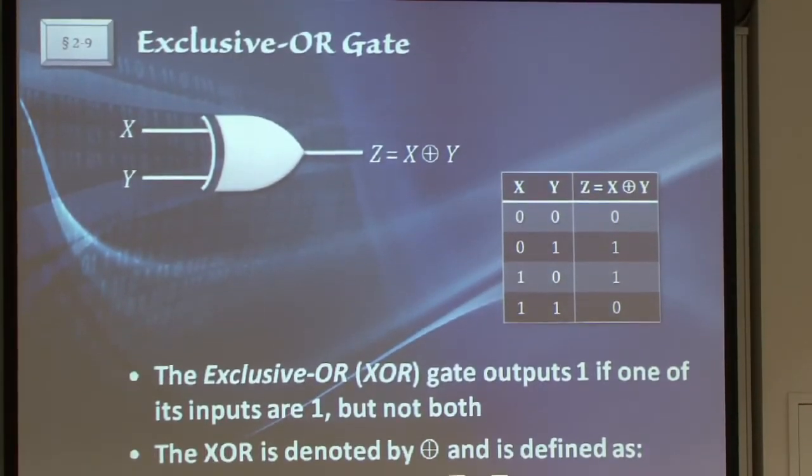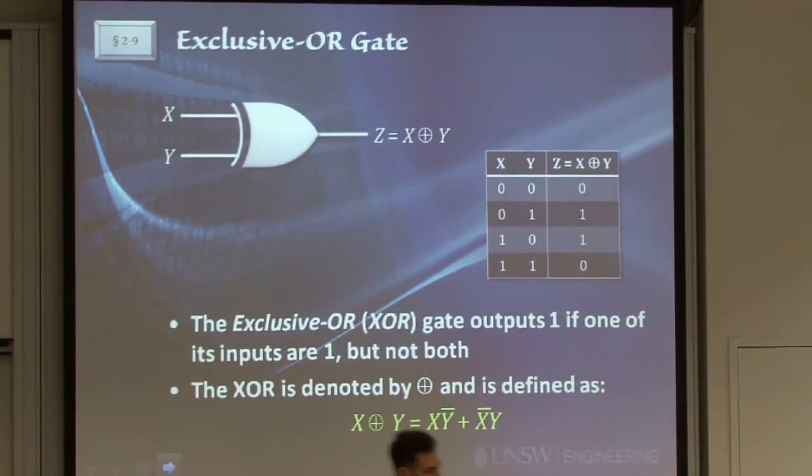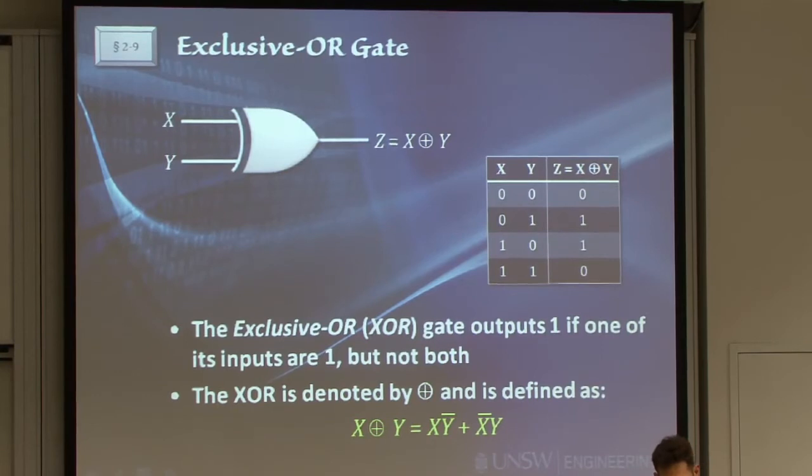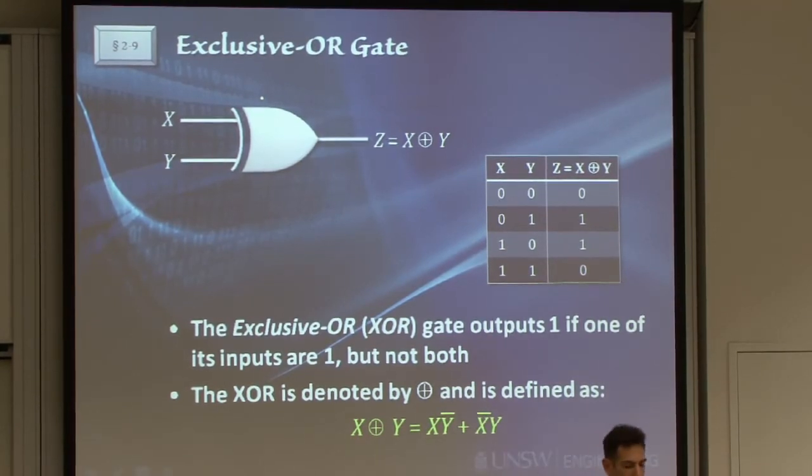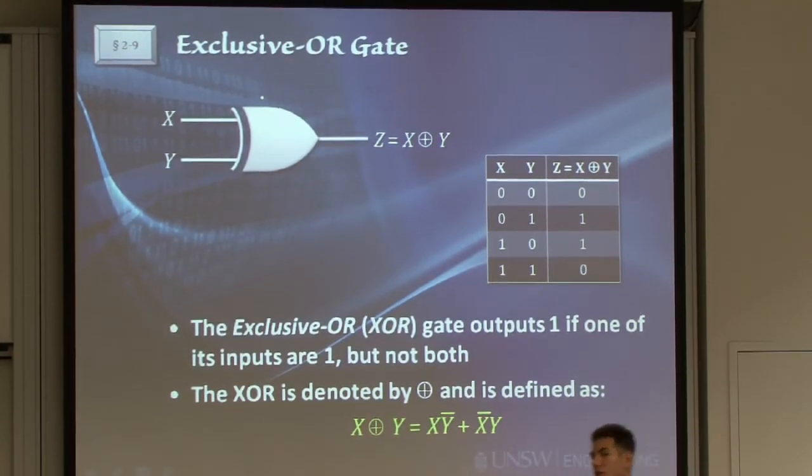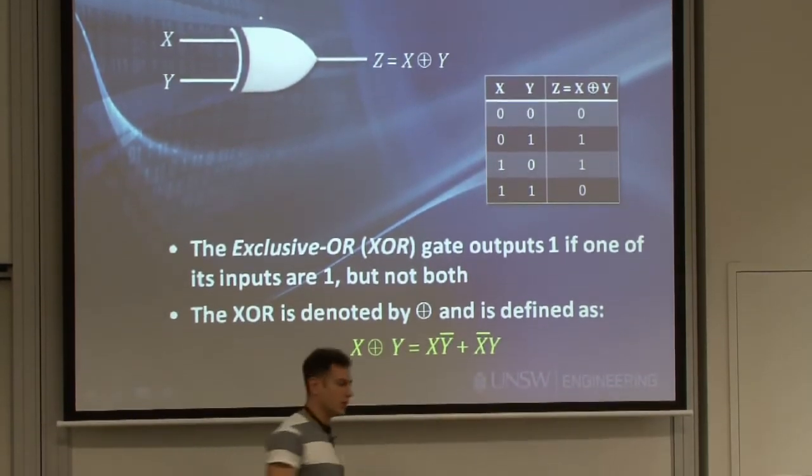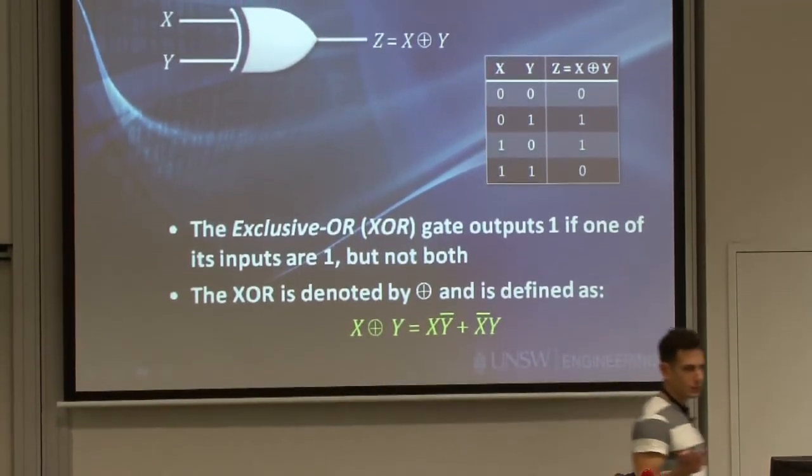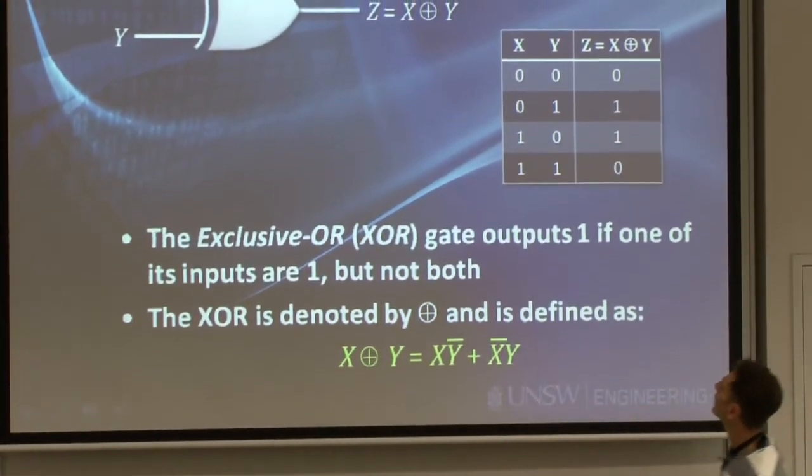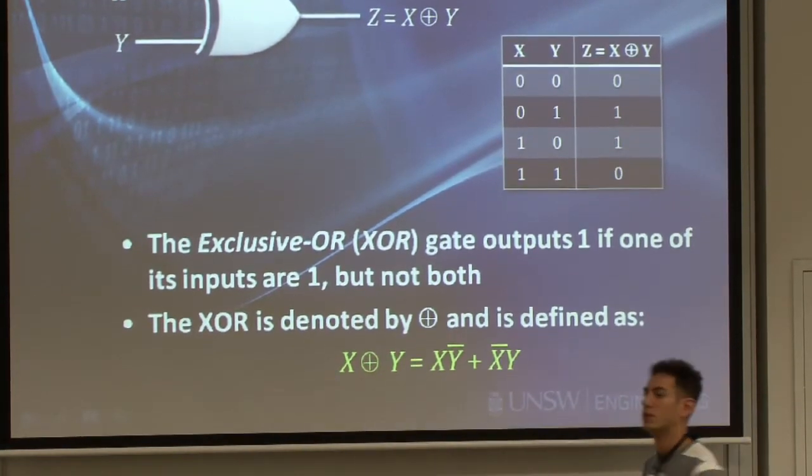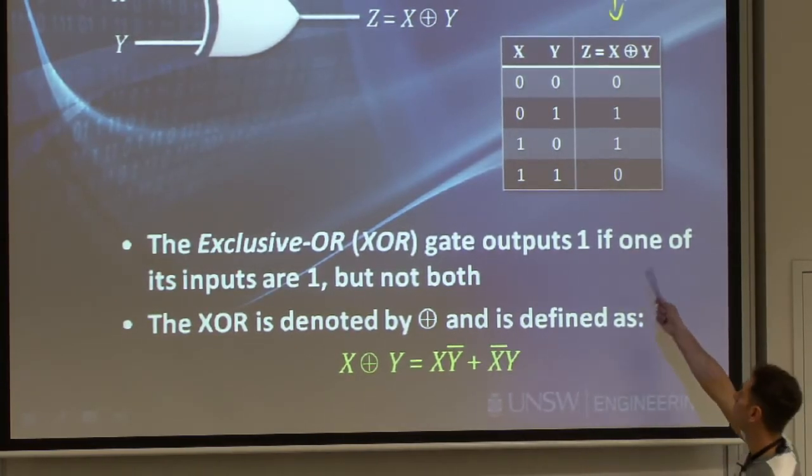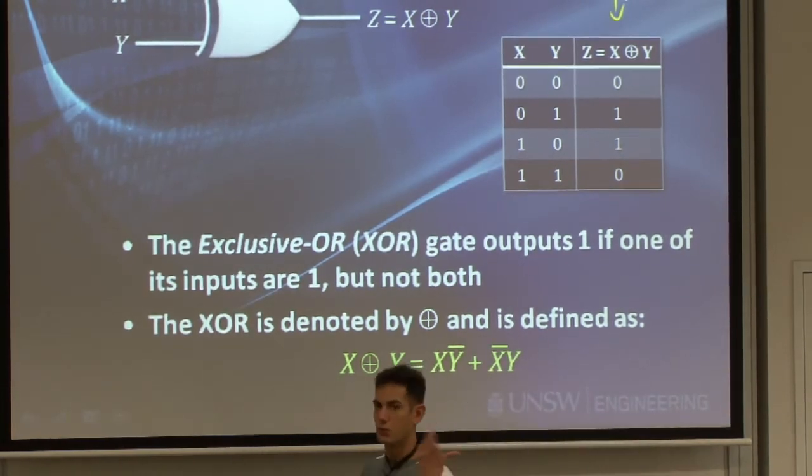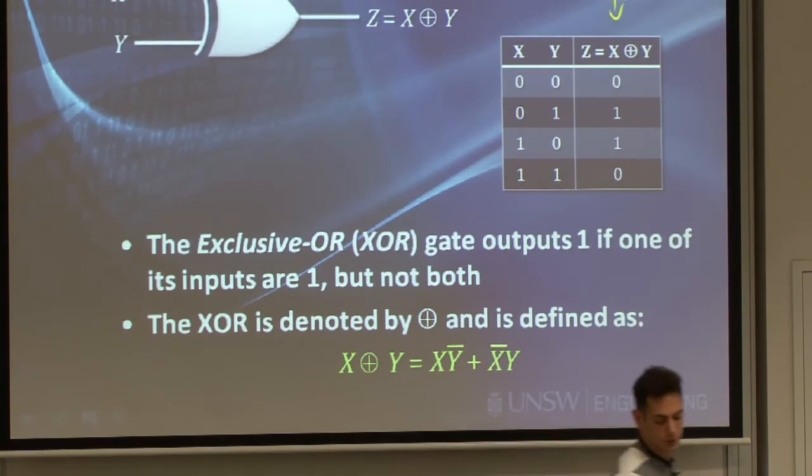Now, another gate type that we will use quite extensively is an exclusive OR. Exclusive OR looks like an OR gate, but has this extra arc over there to denote that it's an exclusive OR. The definition of an exclusive OR is that one of the outputs is 1, but not both. So either X is 1, Y is 1, but not both. If both of them are 0s or both of them are 1s, we will get 0 at the output. That's why it's called an exclusive OR. You can see the truth table for that here. So the combination of 0, 0, and 1, 1 will produce a 0 at the output. And if at least one of them is 1, or at most one of them is 1, we will get a 1.